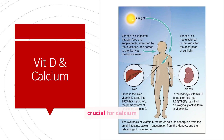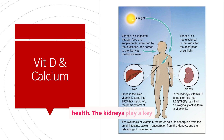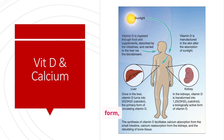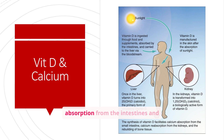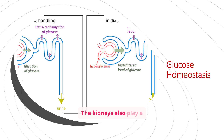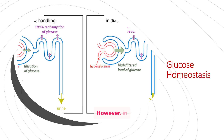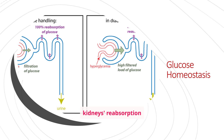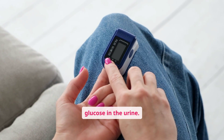Vitamin D is crucial for calcium absorption and bone health. The kidneys play a key role in activating vitamin D into its active form, calcitriol. This active form facilitates calcium absorption from the intestines and reabsorption from the kidneys. The kidneys also play a role in glucose homeostasis. Normally, all glucose filtered by the glomerulus is reabsorbed. However, in diabetes, high blood glucose levels can overwhelm the kidney's reabsorption capacity, leading to glucose in the urine.